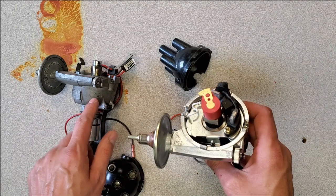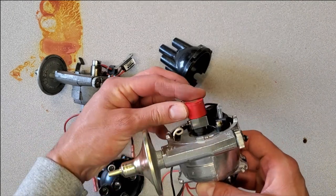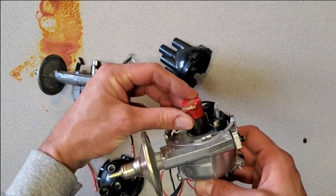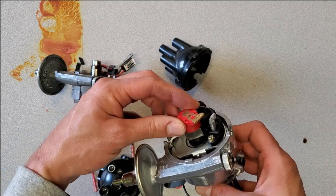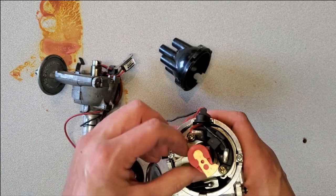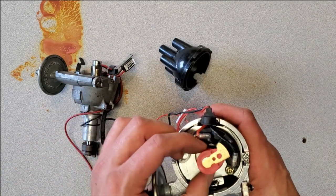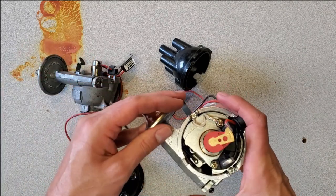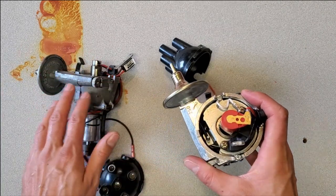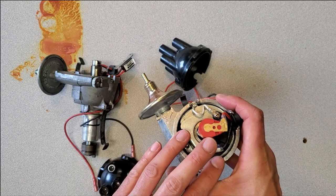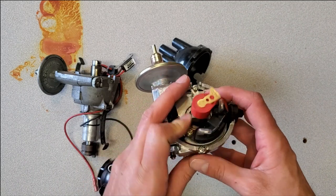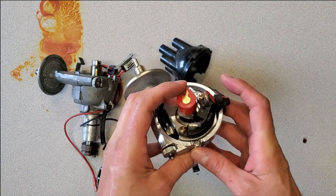They have this square cam which provides the module with position information about when to trigger the ignition event. You can't just transfer the technology into an original Lucas; you have to stick with this unit. However, so far I have yet to see an issue with their technology.